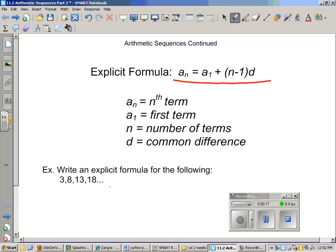Explicit formula: a_n equals a_1 plus n minus 1 times d. When you're writing a formula, you're not going to have a final answer. You will still have variables in the end. a_n, we aren't going to know.